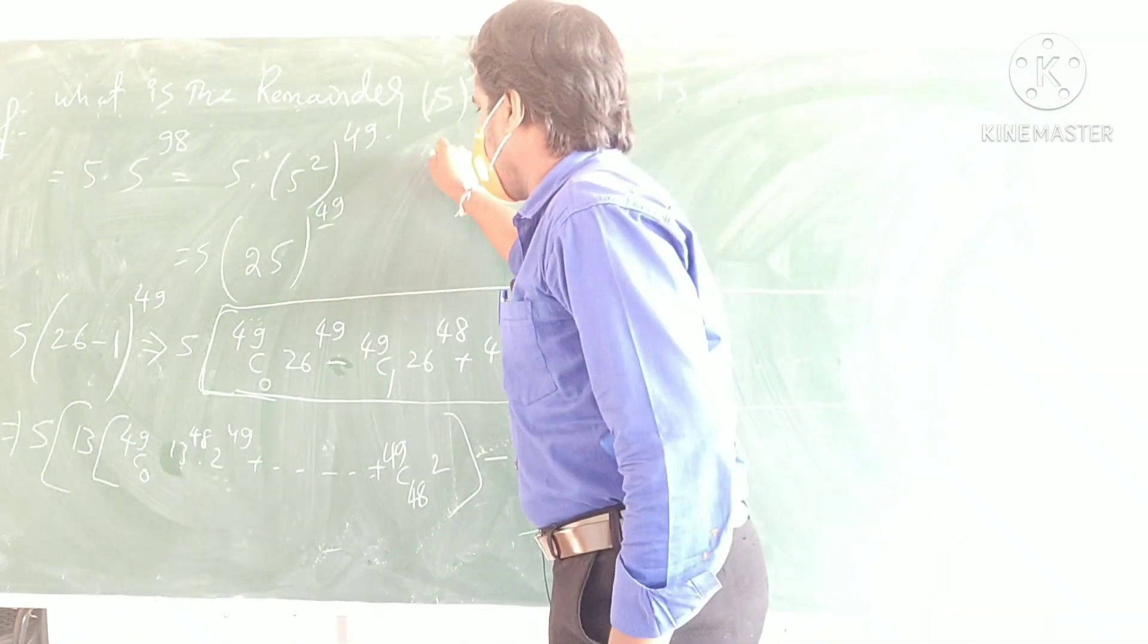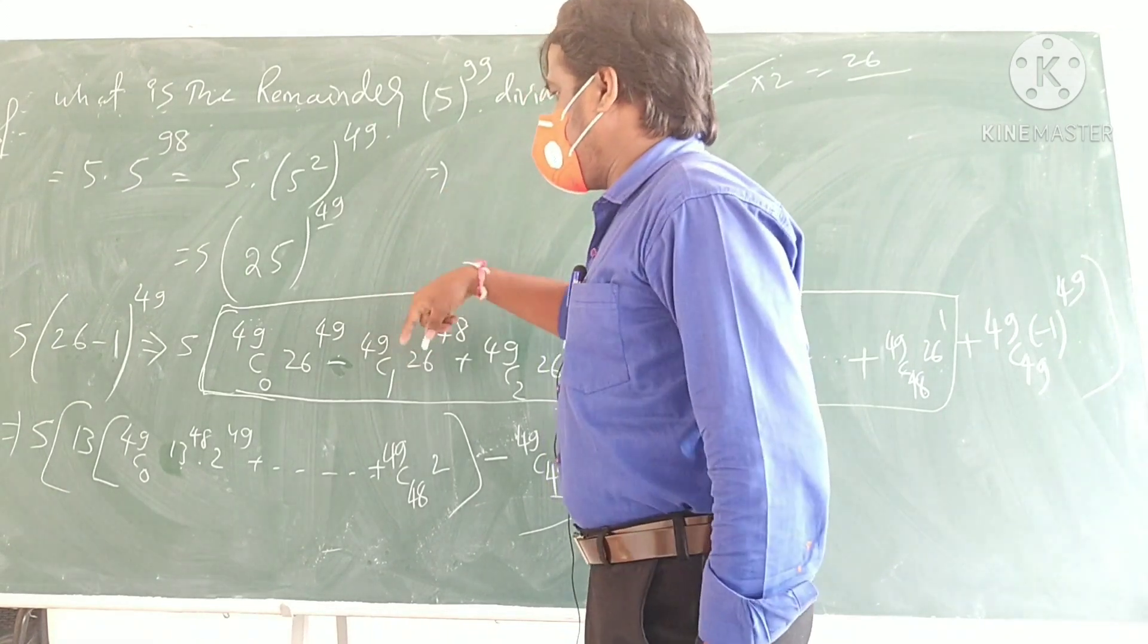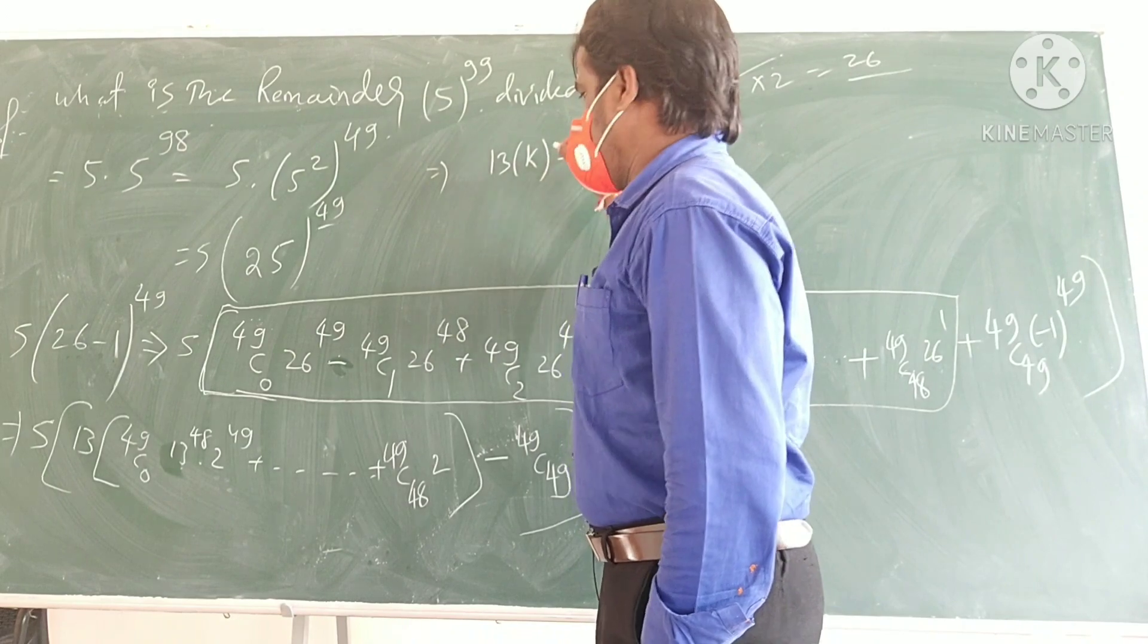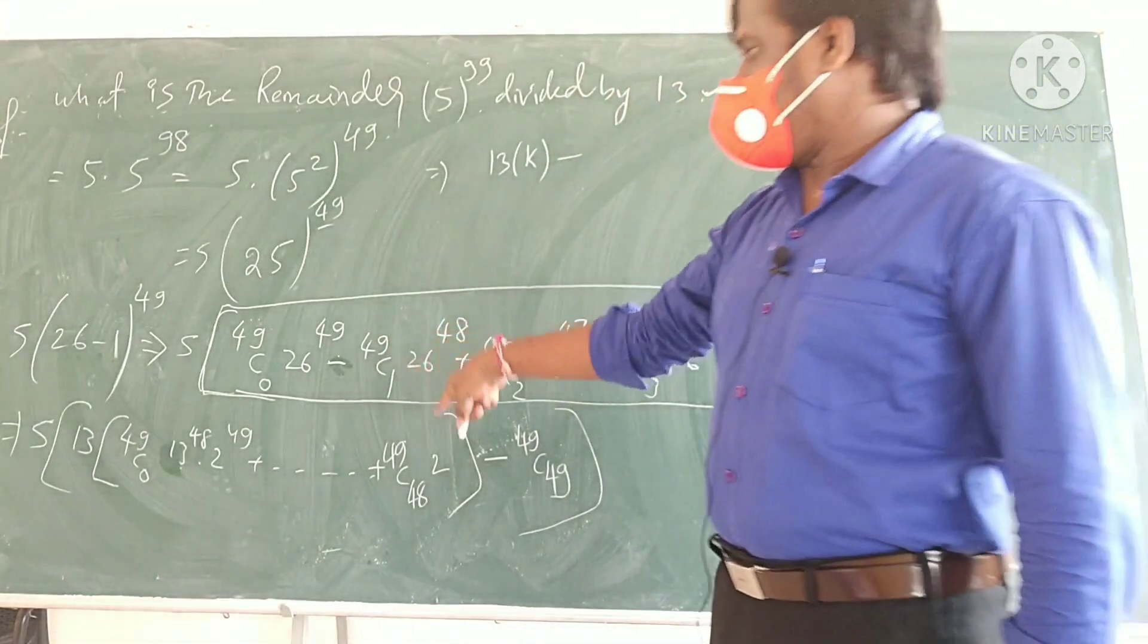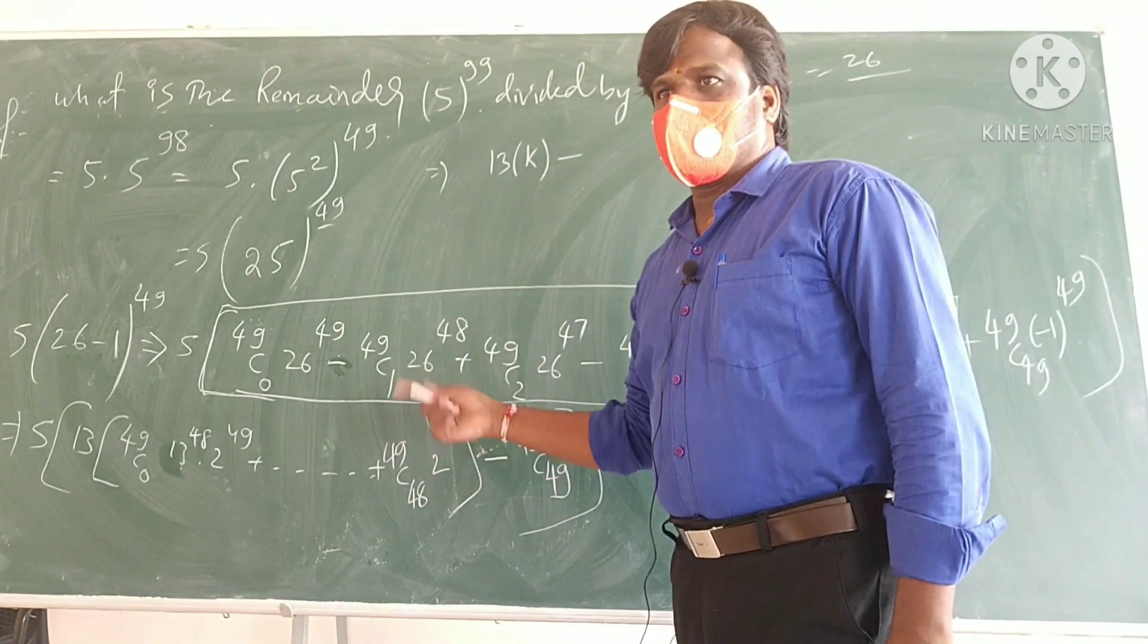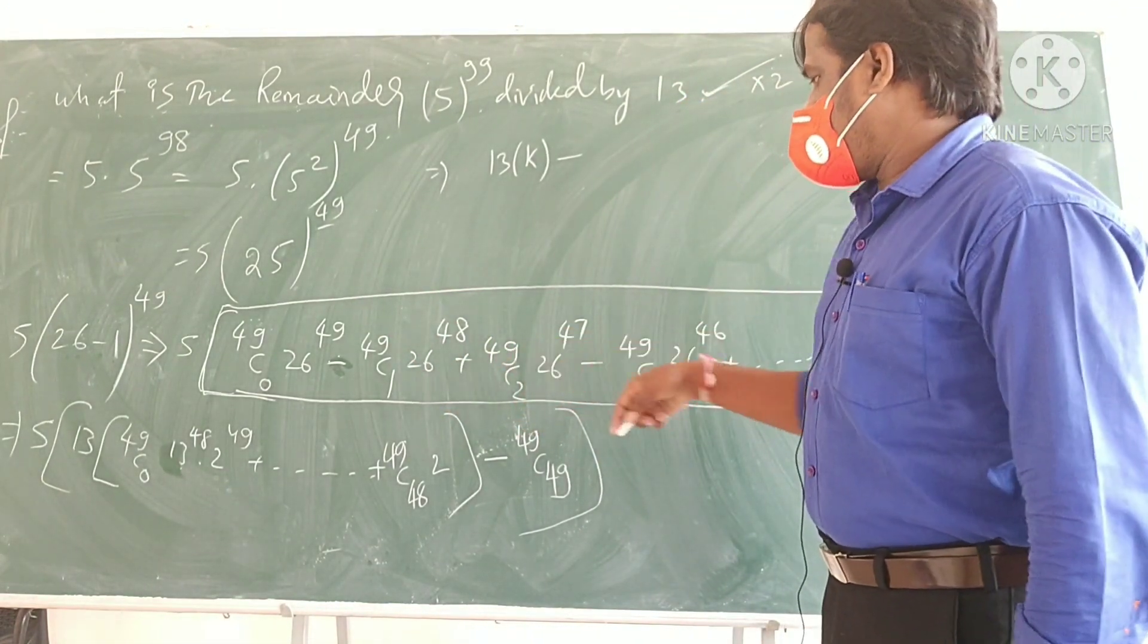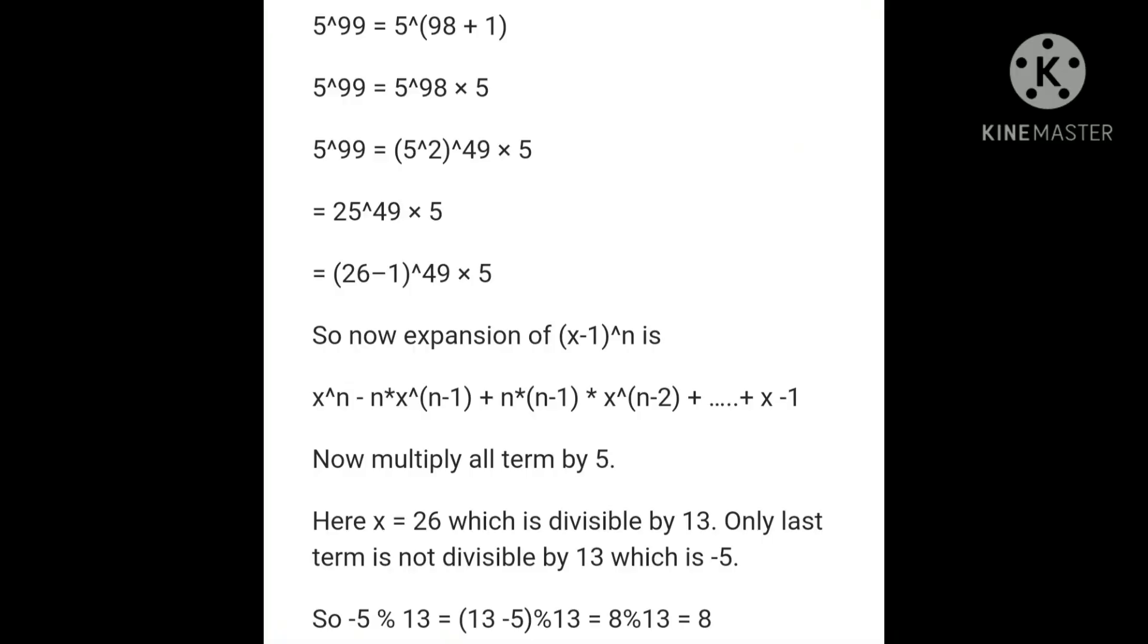So, 13 into, you are going to get here, it is a 13 multiple means 13 into something K, 13 into something K, right, so, that 5 into something also, that something into 5 will become K, right, and then after, what I can write as, 5 minus 5. Term which is not divisible by 13 is here minus 5, so, you want to find the remainder here, so, we can find that is 13 minus 5, that is equal to 8, is the answer.